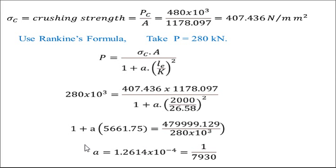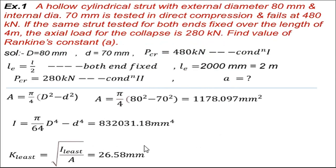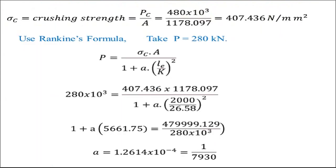So Rankine's constant a = 1 : 7930. This is the answer. By determining all terms one by one and using Rankine's formula, we can find the required value. This completes the first problem based on Rankine's formula.